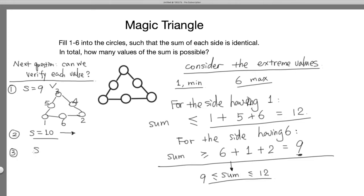Let's say s equals 12. I'm going to skip 11 and come back. For 12, by the logic that we have used, for the side having 1, the sum is going to be less than or equal to 1 plus 5 plus 6 equals 12. So for the 1, it has to pair with 5 and 6, only way.